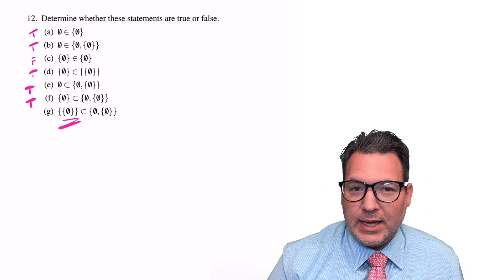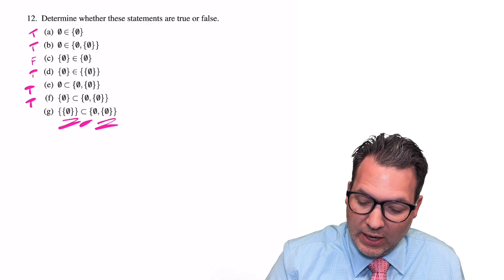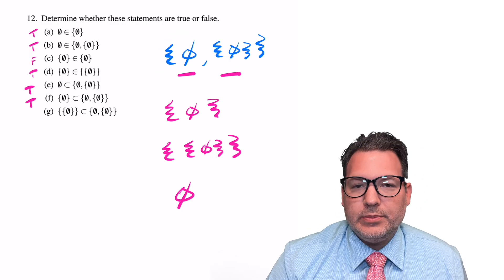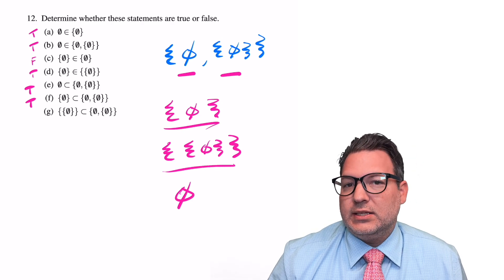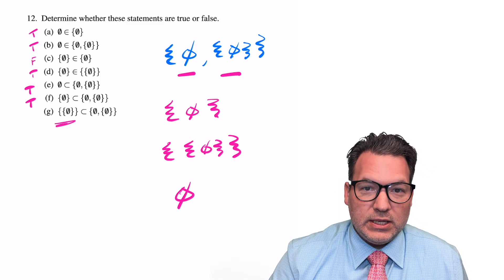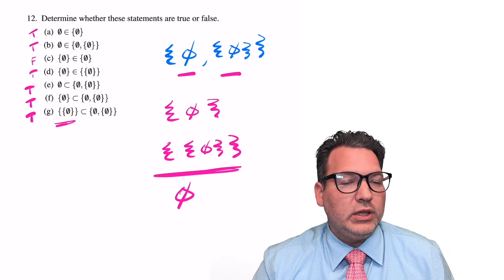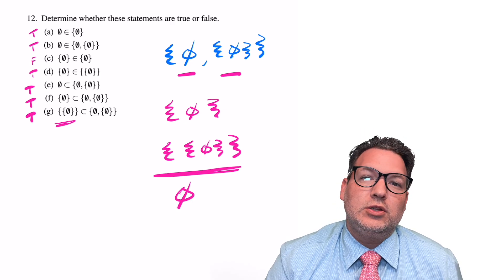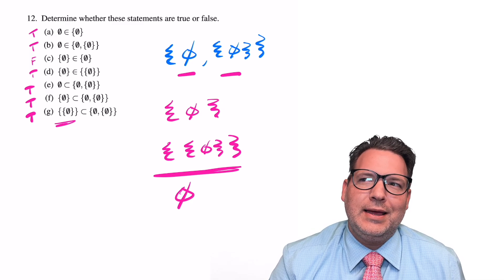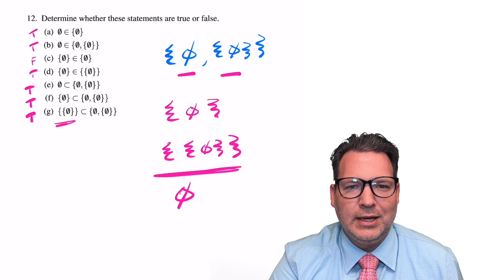And the last one: is the set that contains the set that contains the empty set a subset of the set that contains, as its two elements, the empty set and the set that contains the empty set? Let's bring back our list of subsets — every set is its own subset (an improper subset), and all sets containing elements in any combination of the original set are also subsets. We can see right here that the set containing the set that contains the empty set is indeed one of those four subsets. So G is also true. If you were relying on 'pick all true and hope for the best,' you would have done very well on this quiz. Thanks for watching — comment below with all the things I got wrong, set theorists. I'll see y'all next time.